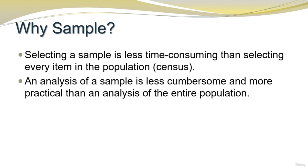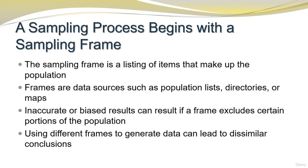Why sample? Selecting a sample is less time-consuming than selecting every item in the population via a census. An analysis of a sample is less cumbersome and more practical than an analysis of the entire population. A sampling process begins with a sampling frame — a listing of items that make up the population. Frames are data sources such as population lists, directories, or maps. Inaccurate or biased results can occur if a frame excludes certain portions of the population, and using different frames to generate data can lead to dissimilar conclusions.